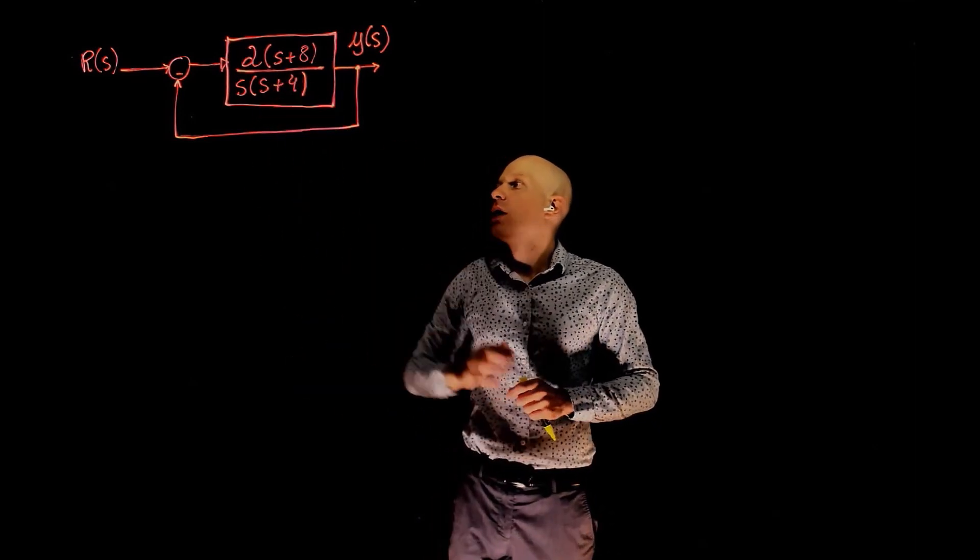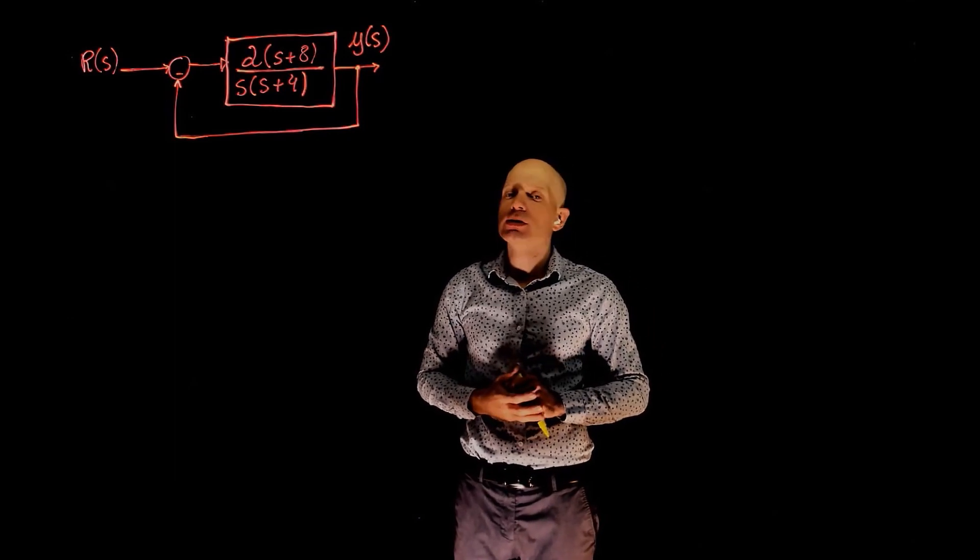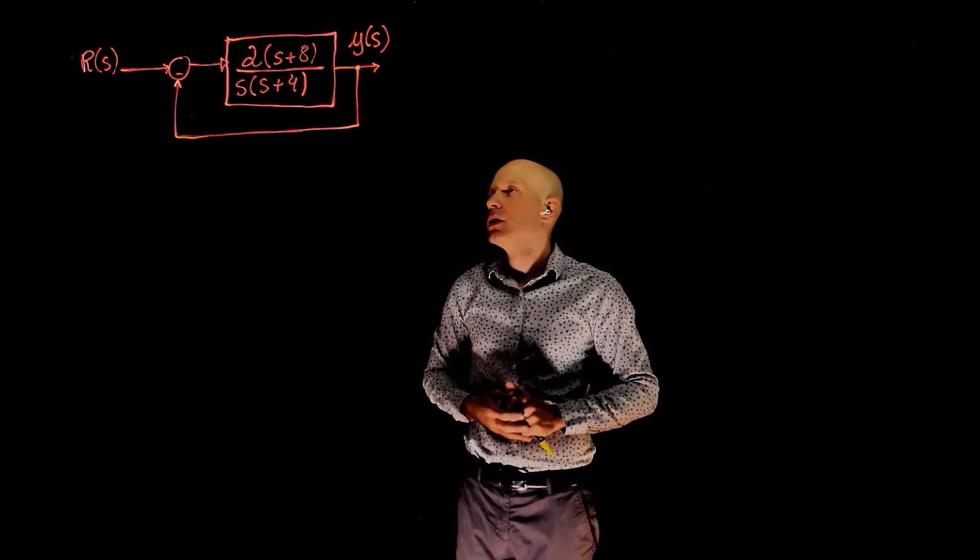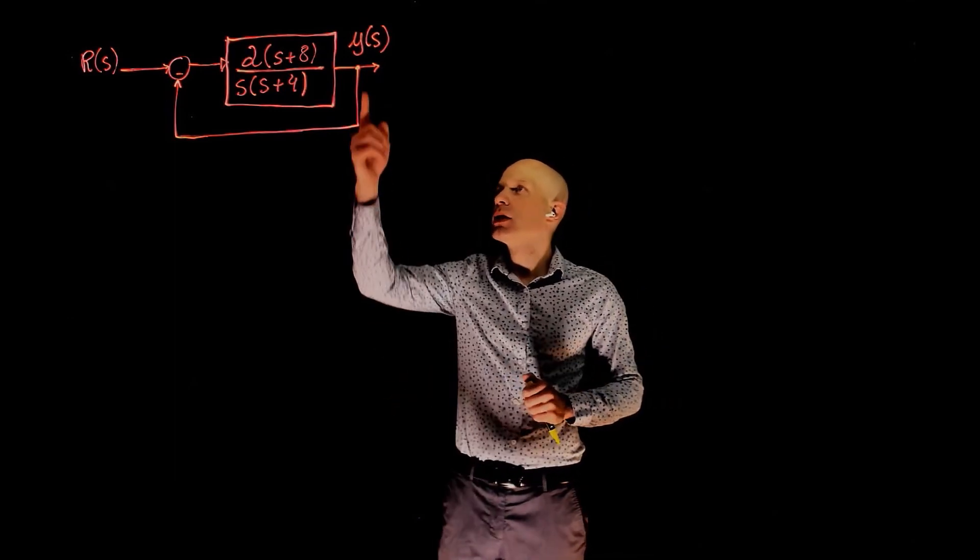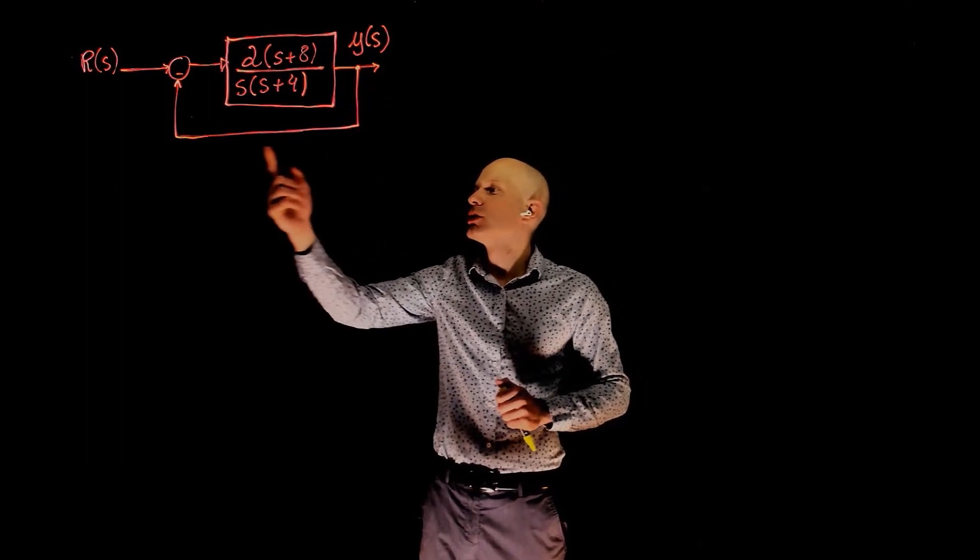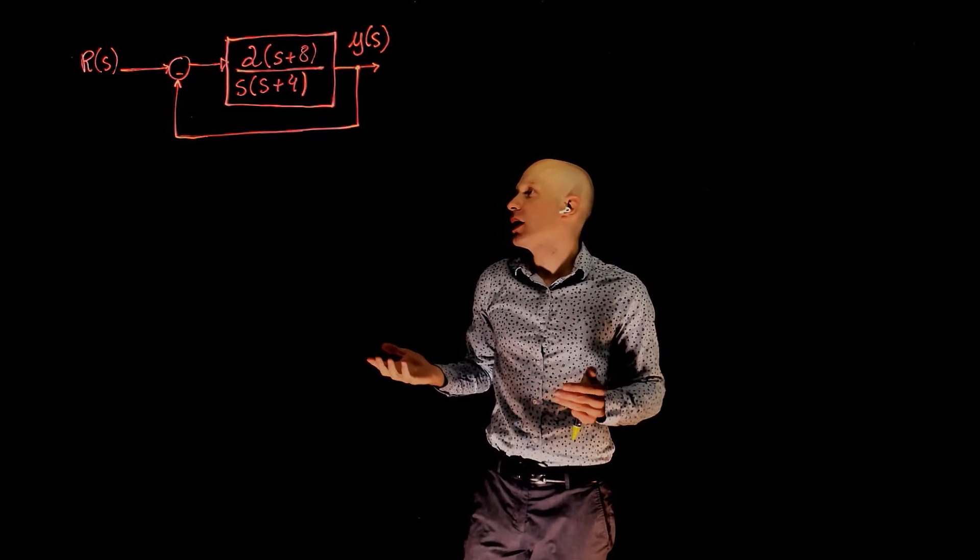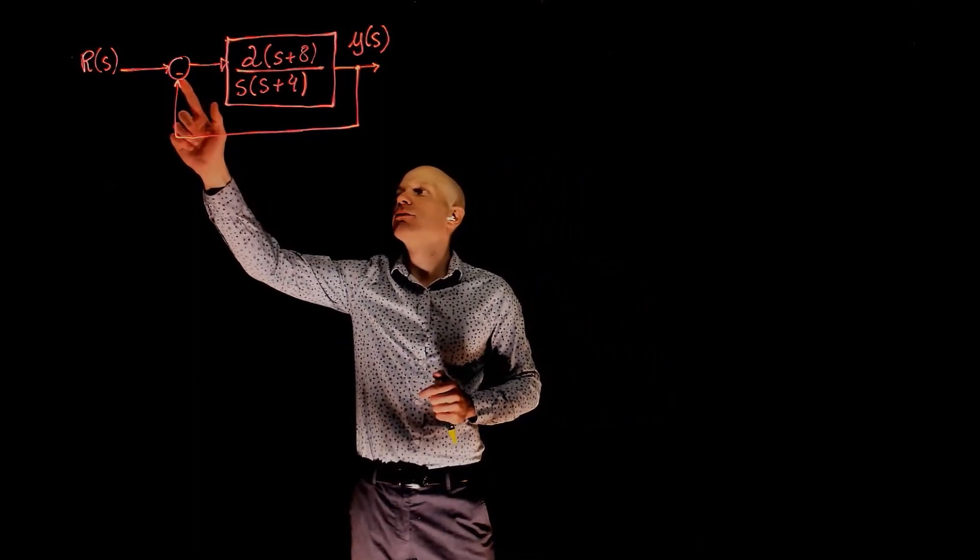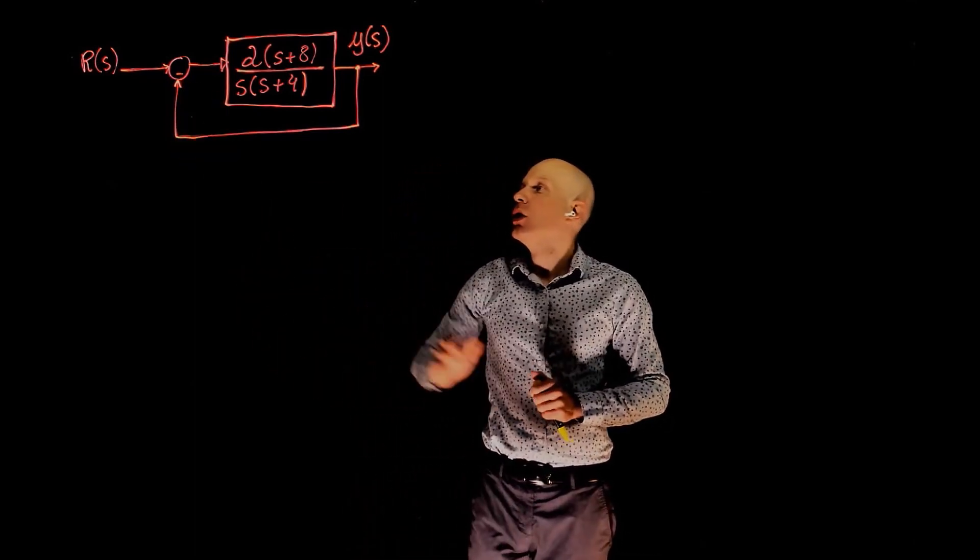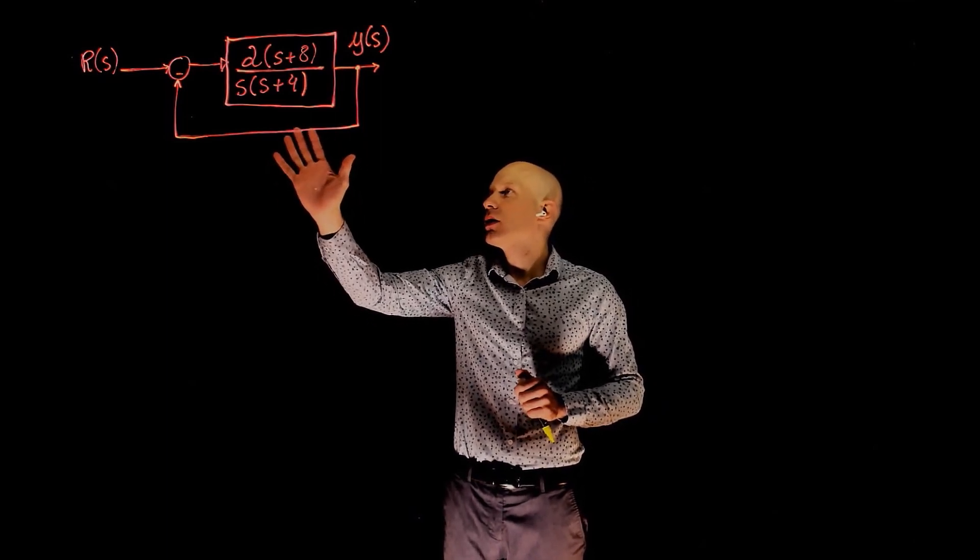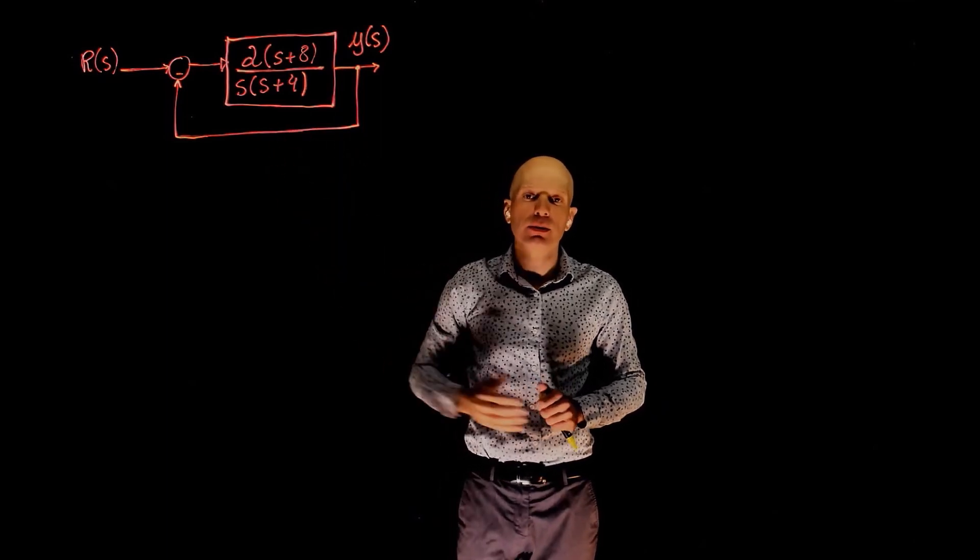In this example, we have a plant whose transfer function is given here, and a unit feedback loop was designed to control that plant. A unit feedback loop means that we are measuring the output and there is no function in this feedback line, and a negative unit feedback loop also means that the feedback here is negative. We now have a control system for our plant, and you are going to study how the system behaves in the temporal domain.